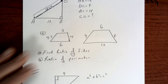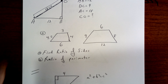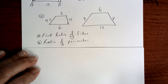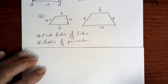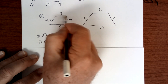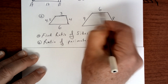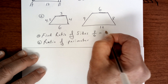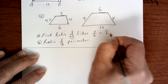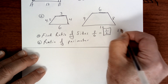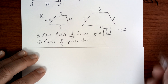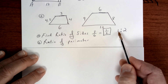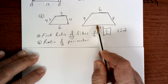Now it says find the ratio of the sides. Ratio is a fraction, so I'm going to do this top part over this top part. The ratio is 3 over 6, which equals 1 half. So it's a 1 to 2 ratio — for every 1 this one gets, this one gets 2, so this one is exactly twice as big.